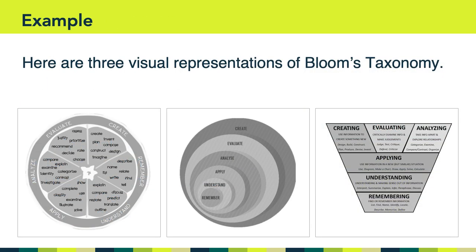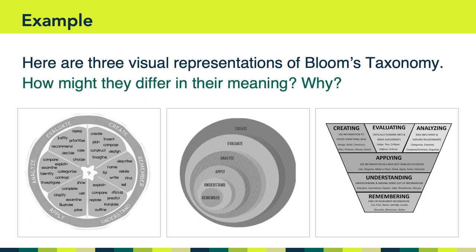Here are three visual representations of Bloom's taxonomy. You'll notice that the content of each is more or less the same; however, the structure or layout of that content, visually speaking, is quite different. Consider: how might these visual representations differ in terms of their meaning? If you gave these representations to people, what do you think they would learn about Bloom's taxonomy? Does the visual representation of this information change what people might take away from each design?